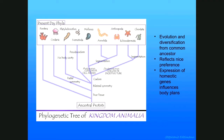The basic gist of the phylogenetic tree is that certain inventions happened during development — we started out as unicellular organisms, and then things like true tissue appeared and bilateral symmetry appeared. Some of these things appear multiple times.